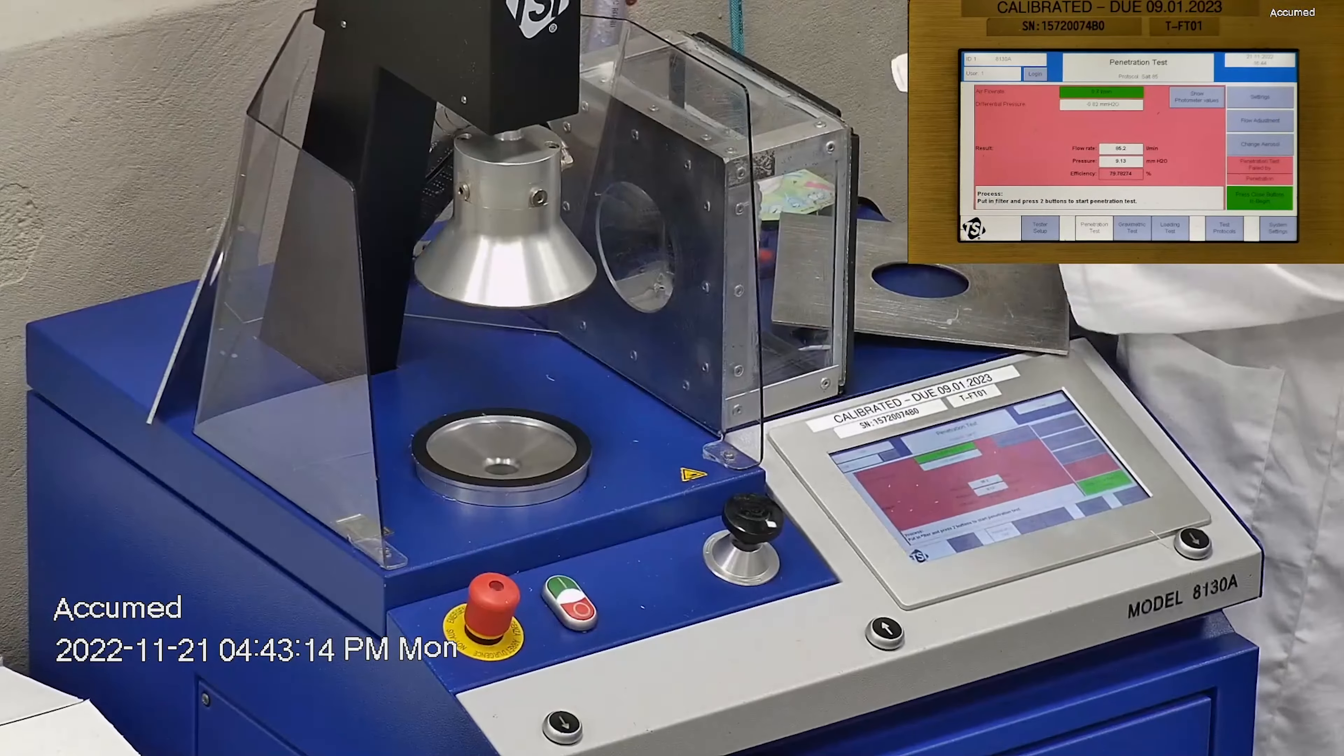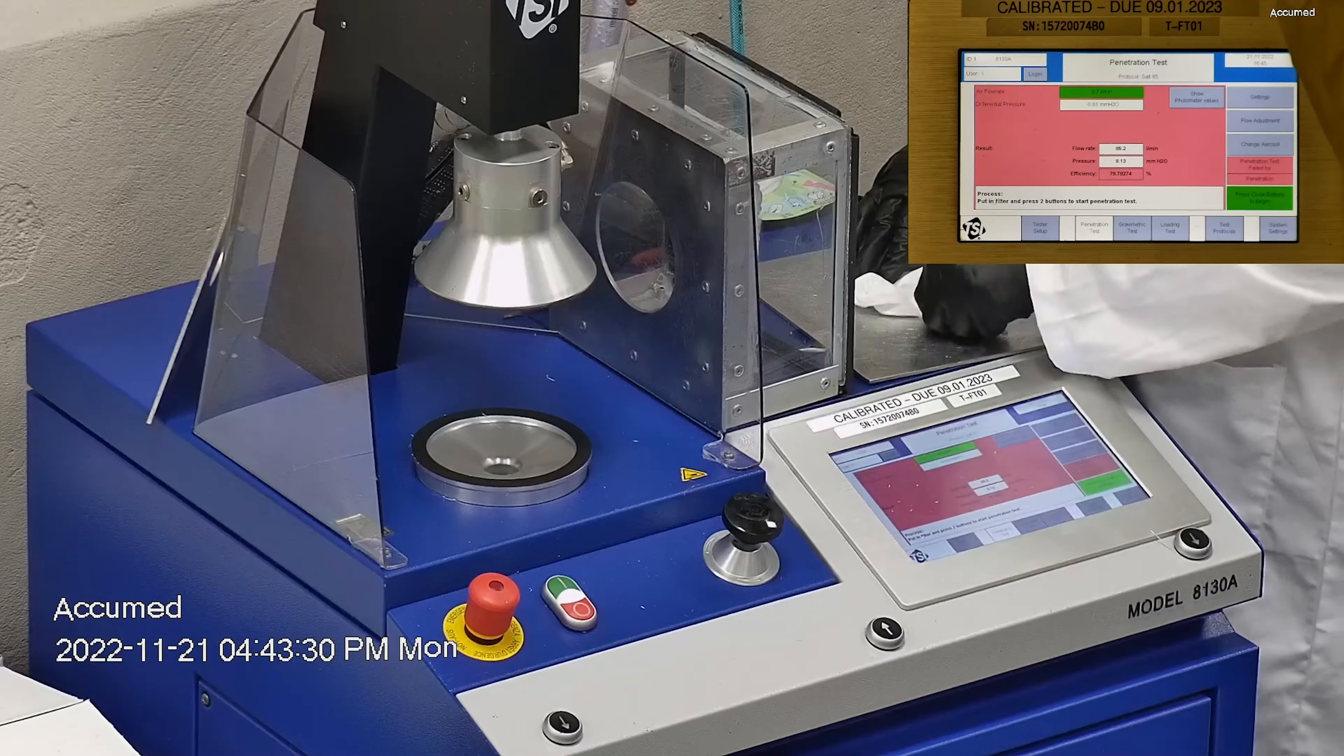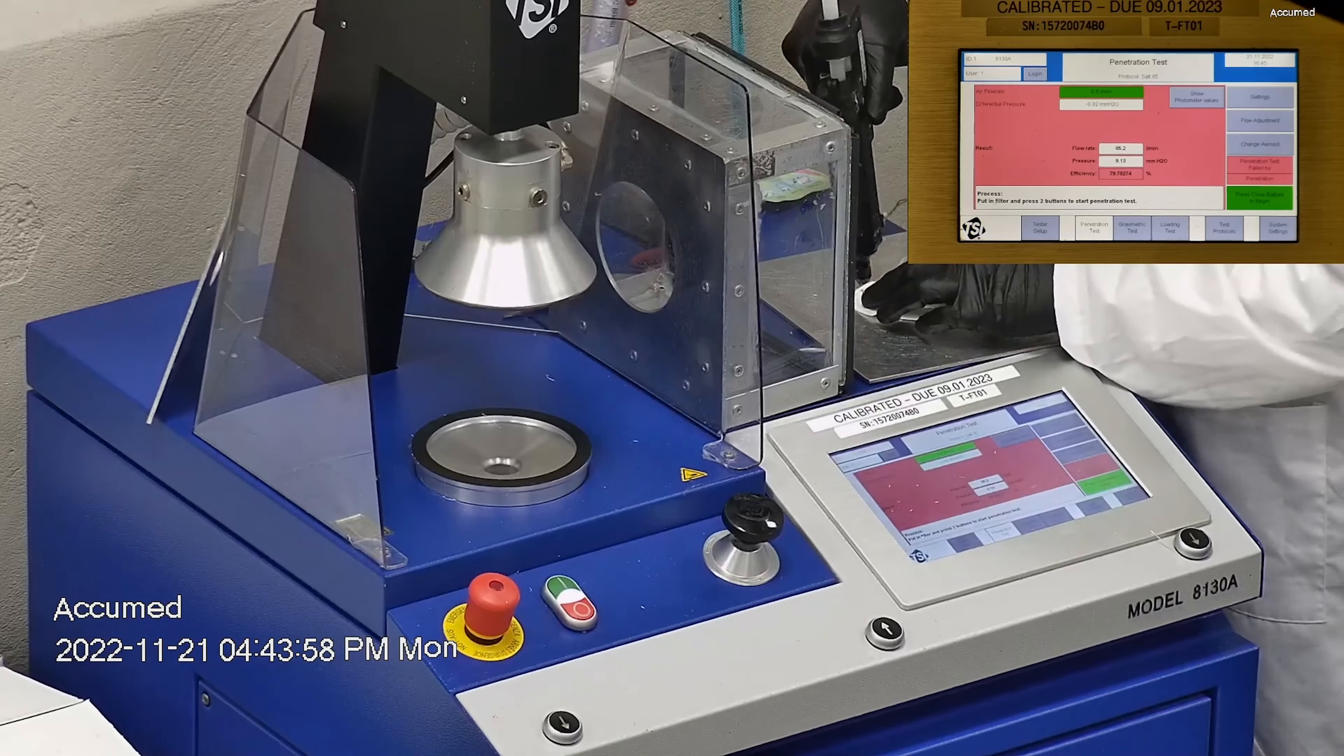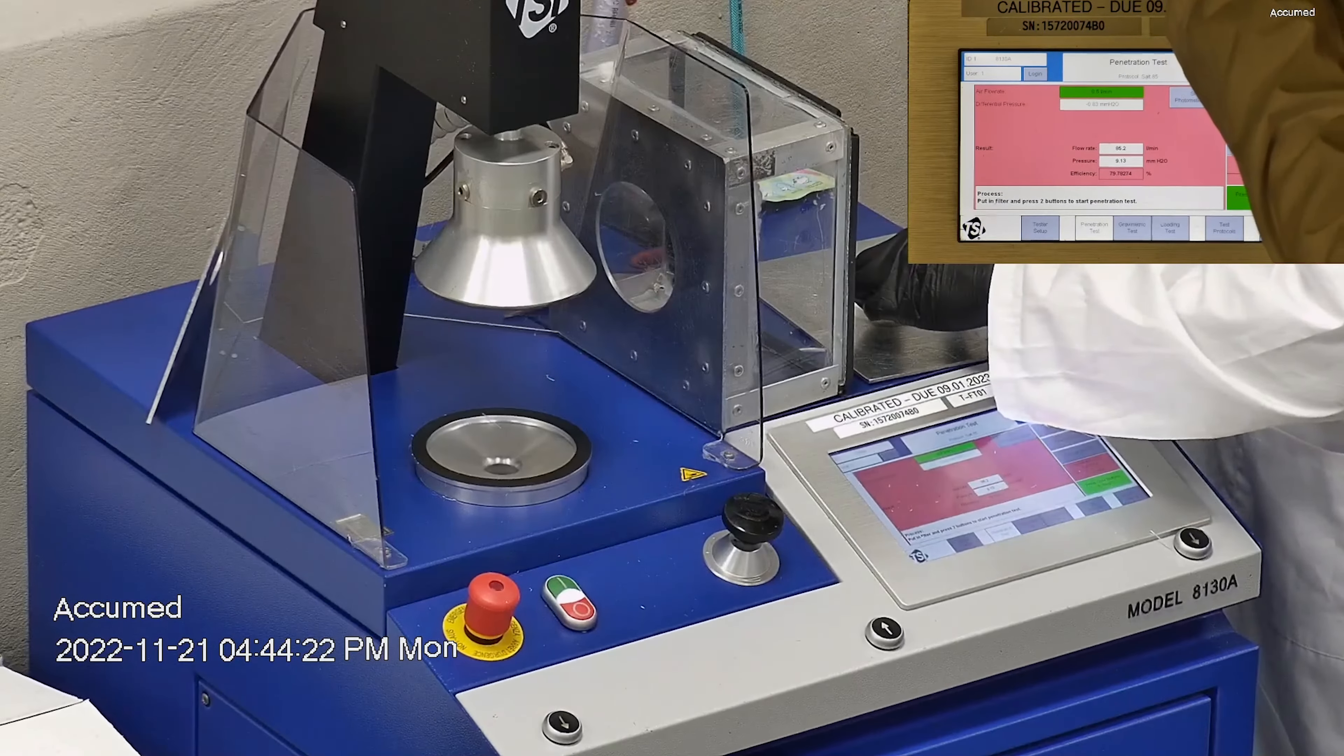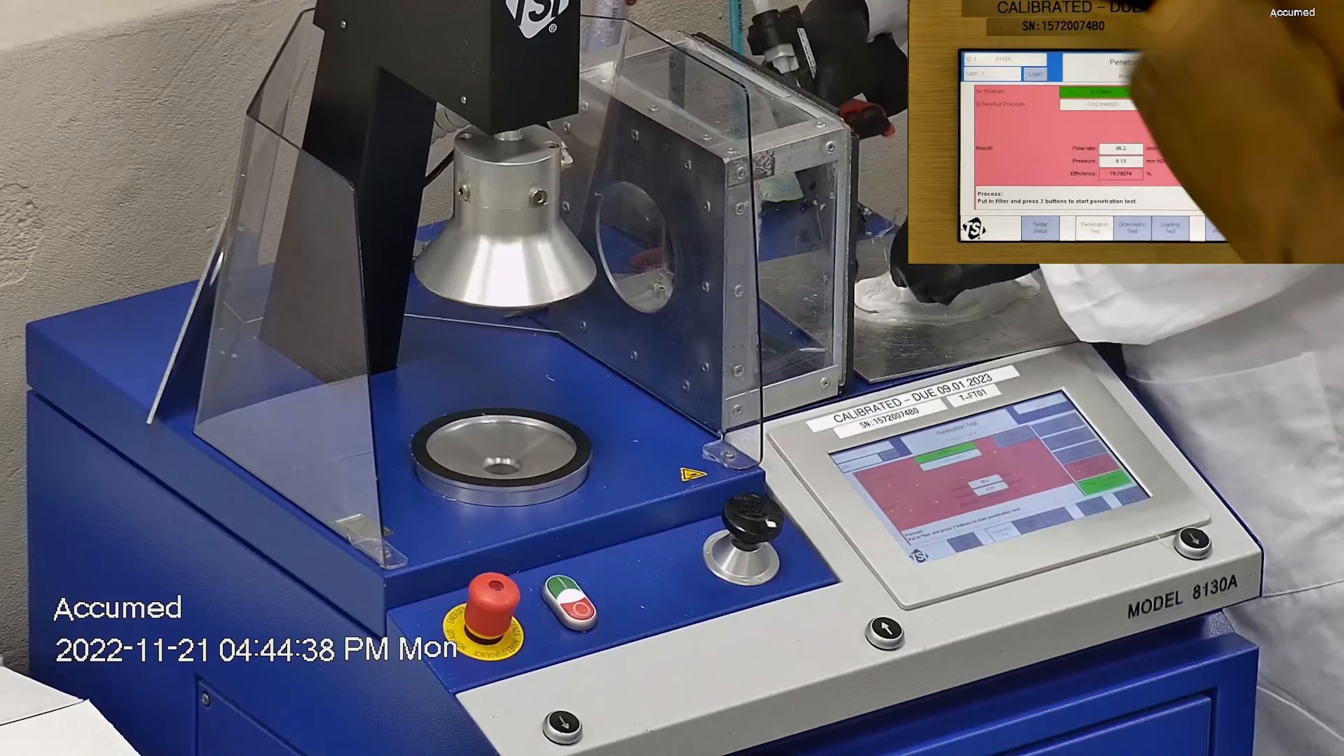The results are displayed on the TSI monitor. F stands for air flow rate, which we test at 85 liters per minute. R is for resistance, also referred to as pressure drop. This correlates with breathability, so the lower the number, the more comfortable and breathable the mask is. E stands for filtration efficiency percentage.